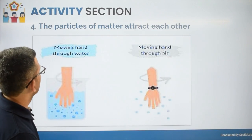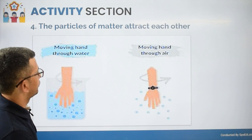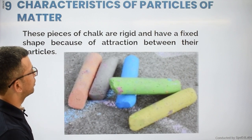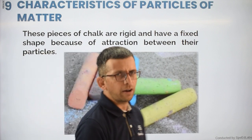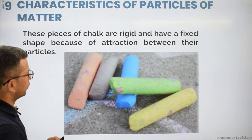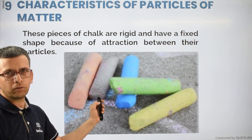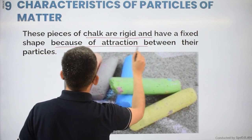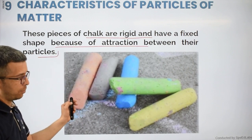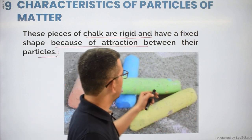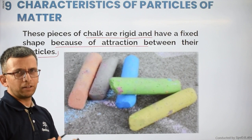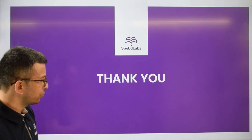Now, particles of matter attract each other. A chalk stick is a good example — chalk pieces are rigid and have a fixed shape because particles of matter are bound together by a force of attraction. Whenever you observe a solid, you can see it has a fixed, definite, and rigid shape because of the attraction force between its particles.